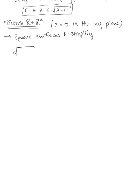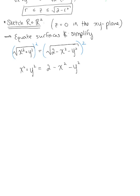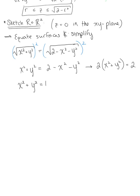Setting the cone equal to the sphere: √(x² + y²) = √(2 − x² − y²). Squaring both sides removes the radicals, giving x² + y² = 2 − x² − y². Bringing all terms to one side: 2x² + 2y² = 2. Factoring out 2: 2(x² + y²) = 2, then dividing both sides by 2 leaves us with x² + y² = 1 — the equation of a circle centered at the origin with radius 1.